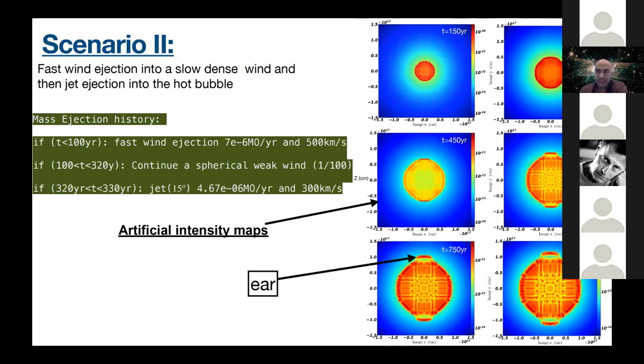Let's move to the second scenario. In the second scenario, we still get ears, but different things. So fast wind ejection into slow wind, and then jet ejection into a hot bulb. So let's see the history of the ejection, mass ejection. In the first 100 years, we have fast wind ejection of 10 to the minus 6 solar mass per year and 500 kilometers per second, and then we continue the spherical wind with a lower density, 1 over 100 from the previous density, and then for a short time, it's about 10 years, we launch a jet of half opening angle 15 degrees. The mass loss rate is 4.67 times 10 to the minus 6 solar mass per year, and the velocity is 300 kilometers per second.